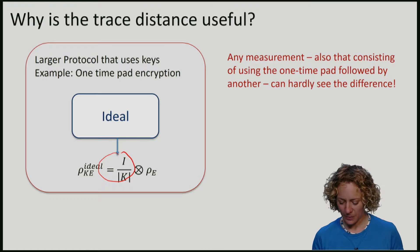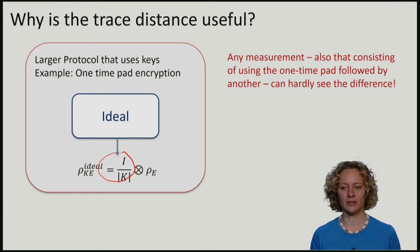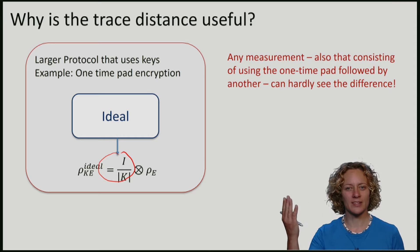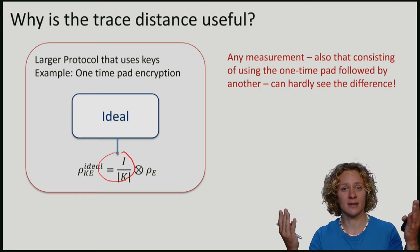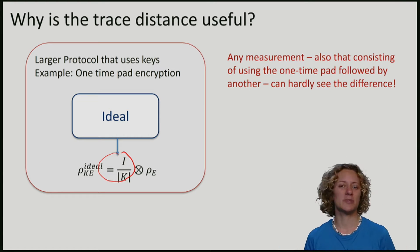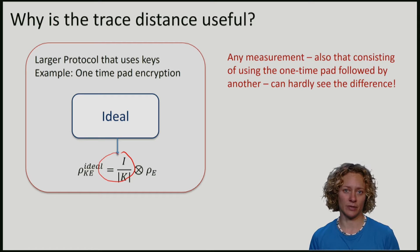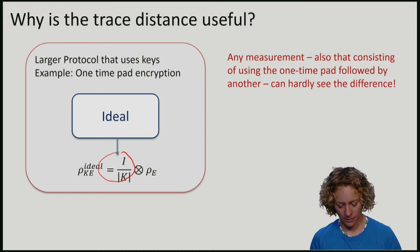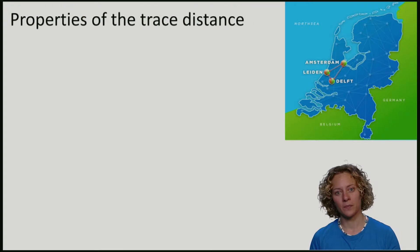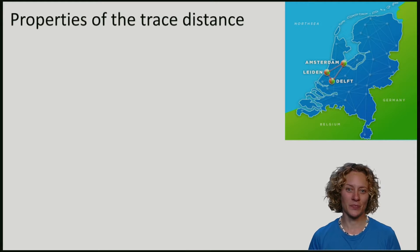In particular, it also means that any measurement, also ones that consist of, for example, using the one-time pad, followed by another measurement, can hardly see a difference. So if we use the real state instead of the ideal state in a larger context, it means that we will not be able to see the difference. So this is why the trace distance is so extremely important in cryptography.